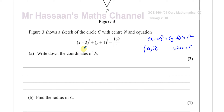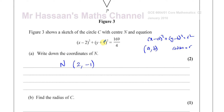In this case, the value of x that makes the bracket zero is 2, so the x-coordinate is 2. The value of y that makes the bracket zero is negative 1, so the center N is (2, −1). It's basically the same number you find in the bracket with the opposite sign.